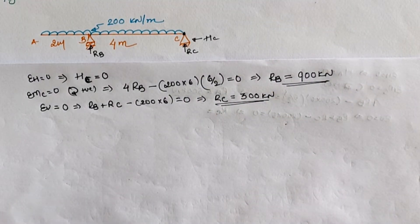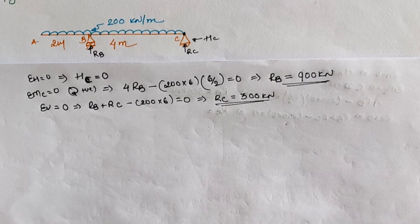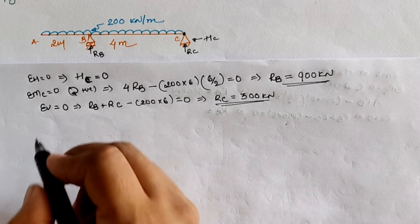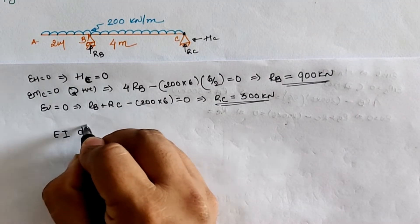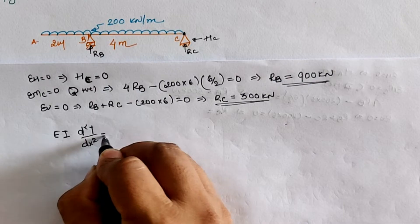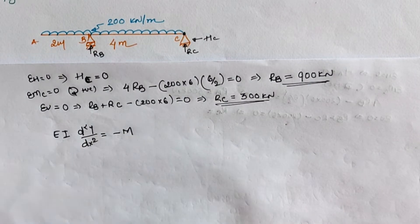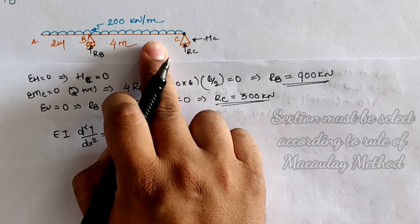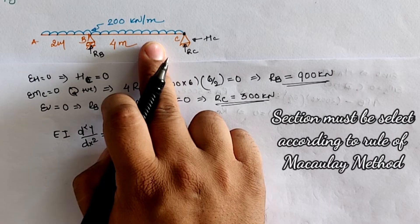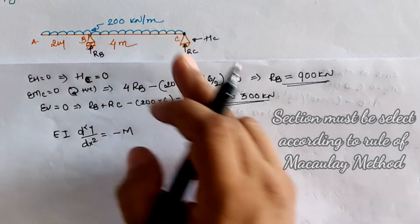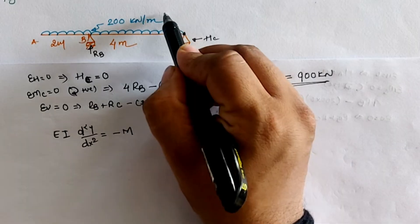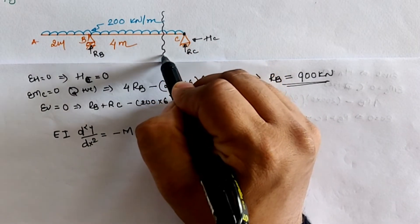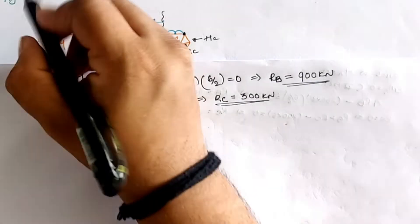For the analysis of the given beam using Macaulay's method, the elastic equation is EI d²y/dx² = −M. We take a section in the last portion of the beam such that it cuts through the UDL — so we assume the section is between B and C, with point A as the origin.